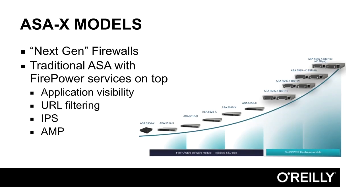The successor to the ASA firewall is the ASA X models. They run the same software — whatever software you run on a 5505 or 5510, you run the same software on these firewalls. The difference is that on top of the ASA X models, you can also run Firepower services from Sourcefire. You configure the firewall exactly the same for the X models, but you can also install the Sourcefire Firepower services on top of that.